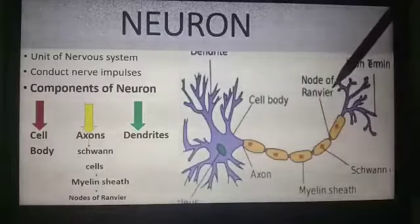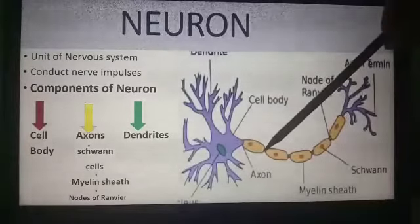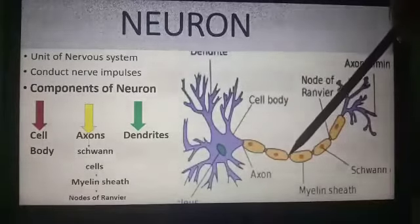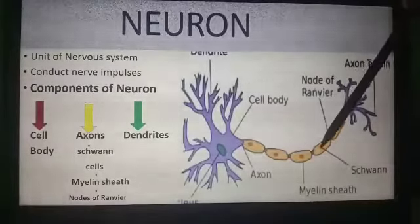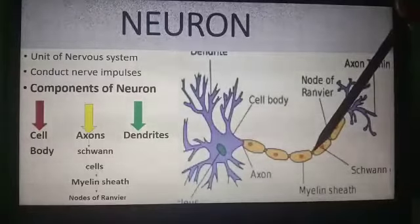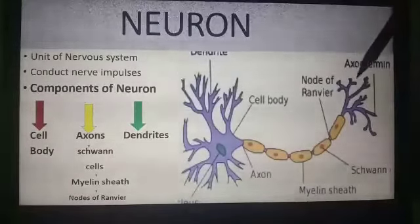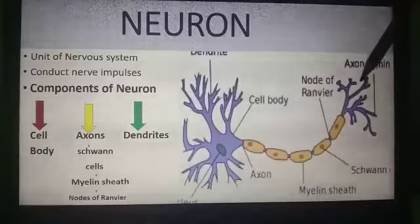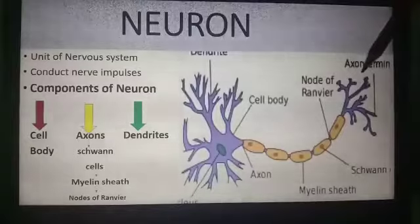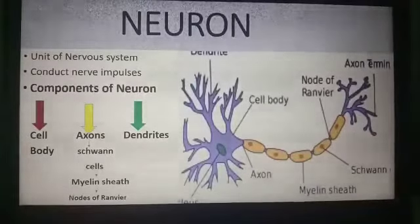Such impulses, which jump from one Node of Ranvier to another, are called saltatory impulses. Saltatory impulses increase the speed of nerve impulse conduction.